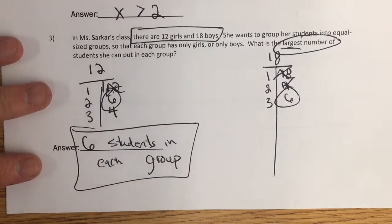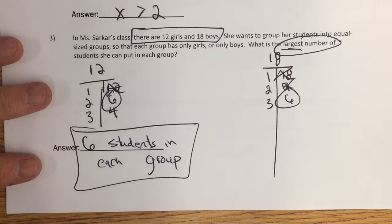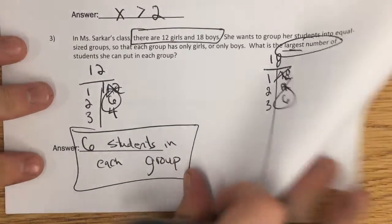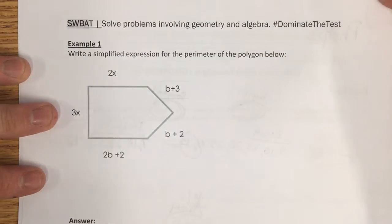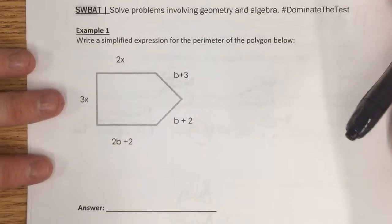Again, pause and rewind if you need to. We're going on to example 1. Turn the page now. Example 1, we've got some crazy looking shape, and it says, write a simplified expression for the perimeter of the polygon below. Well,